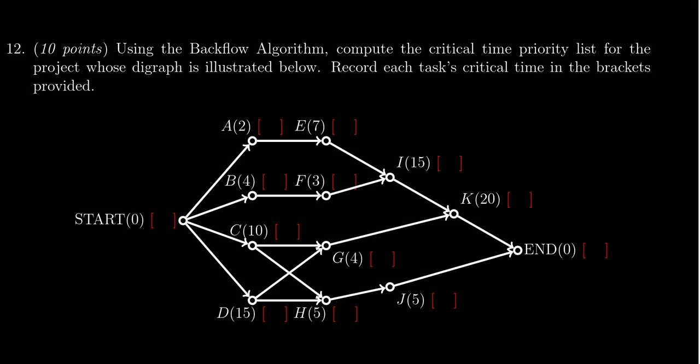In this video we provide the solution to question number 12 for practice exam number two for math 1030, in which case we're asked to use the backflow algorithm to compute the critical time priority list for the project whose project digraph is illustrated below. So we have to come up with the critical time priority list but we have to also show our work by computing the critical times of each of these tasks.